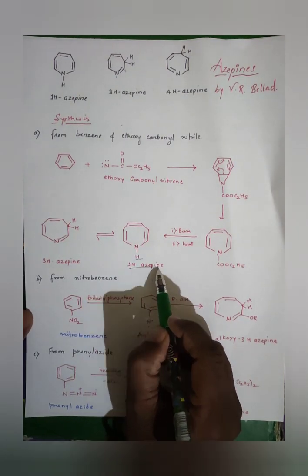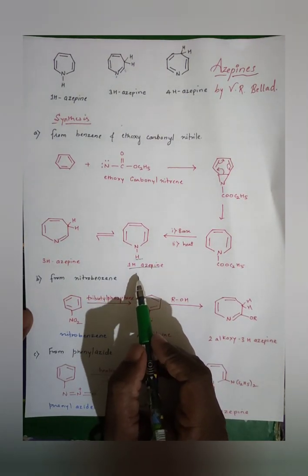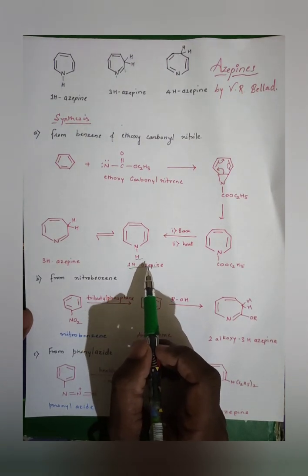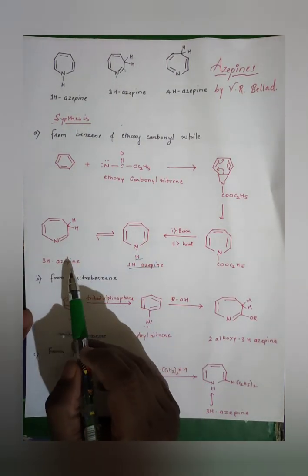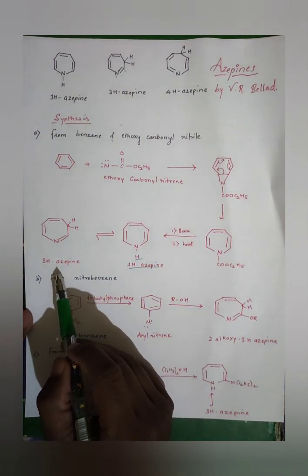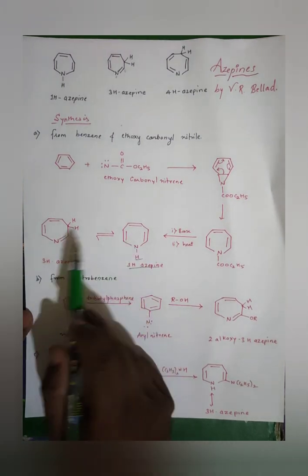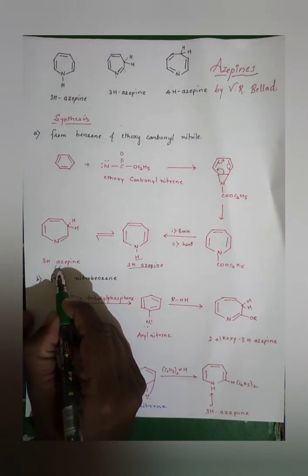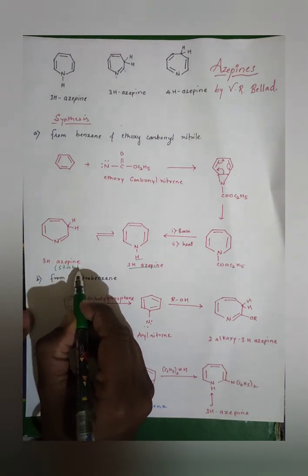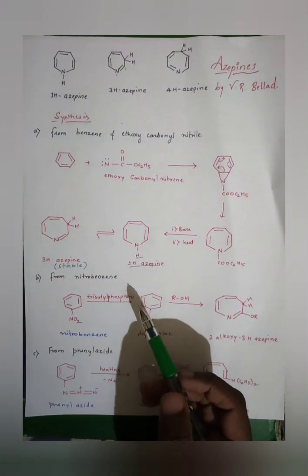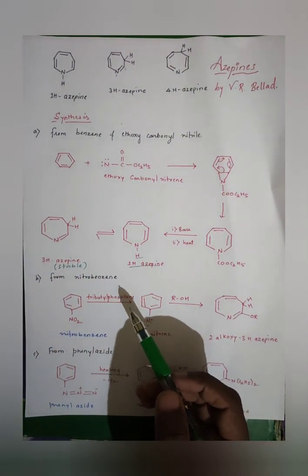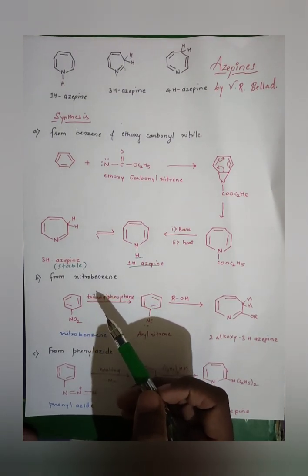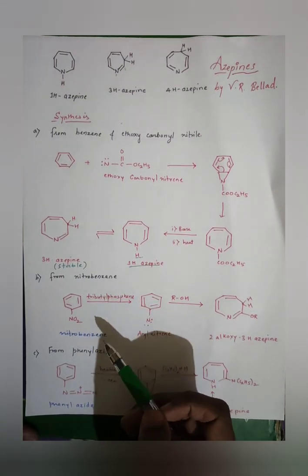What is left out is just H, and this compound is known as 1H-azepine. Always remember: whenever we get 1H-azepine, it will try to convert itself into 3H-azepine because these two are isomers, and 3H-azepine is the most stable form. Hence azepines are seen in the 3H-azepine form only.